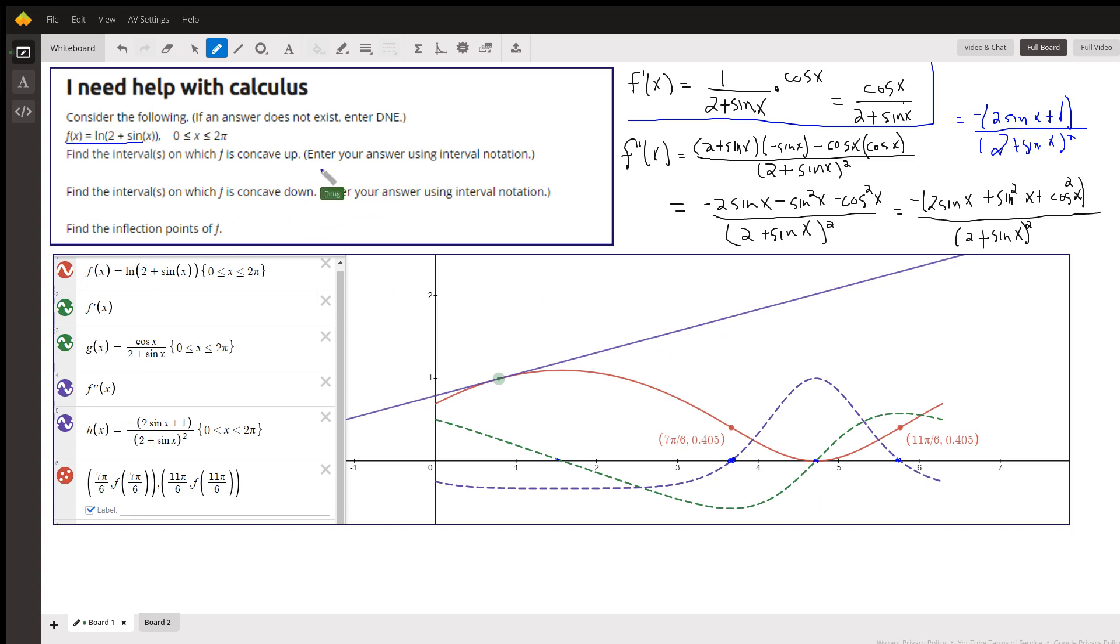So first of all, how do we find the first derivative? Well, the derivative of the natural log of anything is 1 over the anything times the derivative of the anything, the chain rule. So that's what this is right here, 1 over the anything times the derivative of that anything is cosine of x.